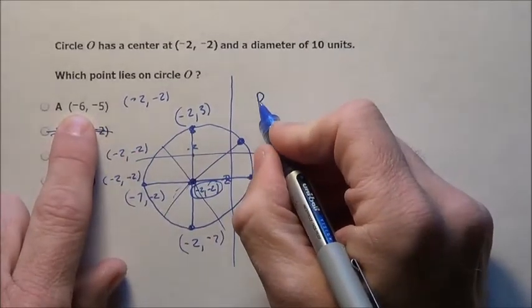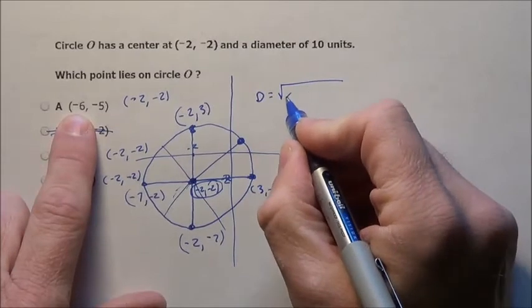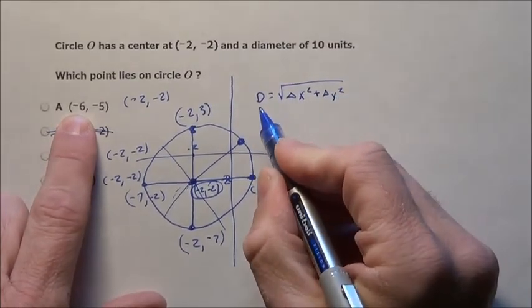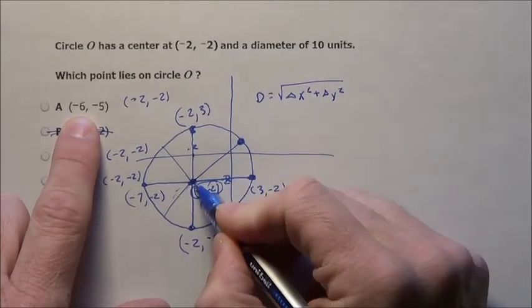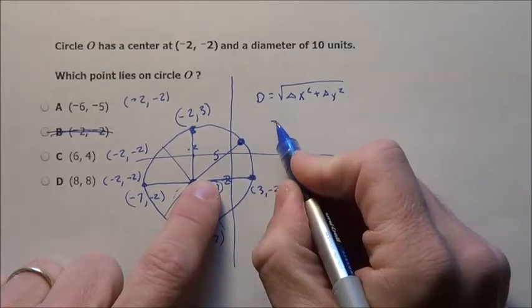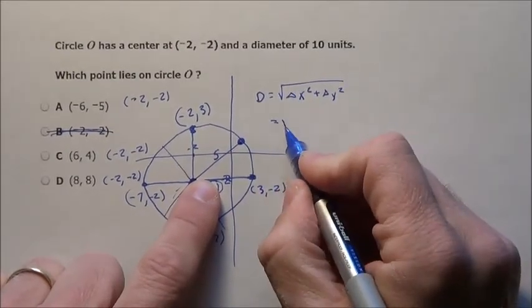The distance formula is the change in the x's squared plus the change in the y's squared. And we need this distance from the center to the point to come out to be a radius of 5. So we need this distance to be 5. So we need 25 in this square root.